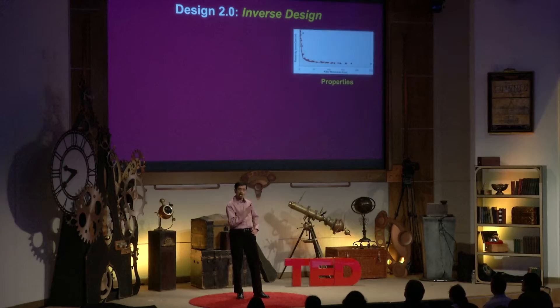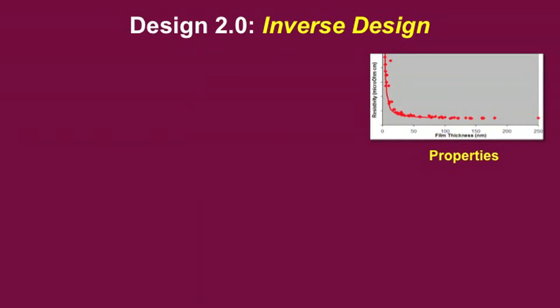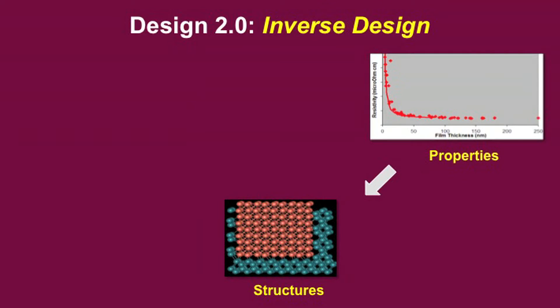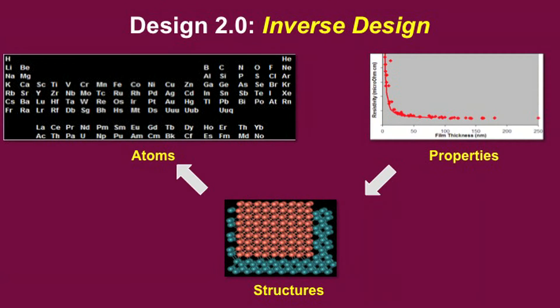We start with the properties we would like to have, then use computers to determine what type of structures could give those properties and what atoms you'd need to put together to get those structures. This is the concept of inverse design. Most people think — okay, there are 60 or 70 elements and known properties, it should be straightforward — but it's not.